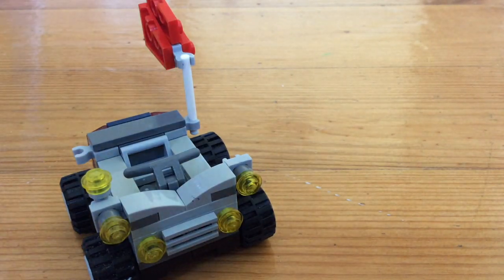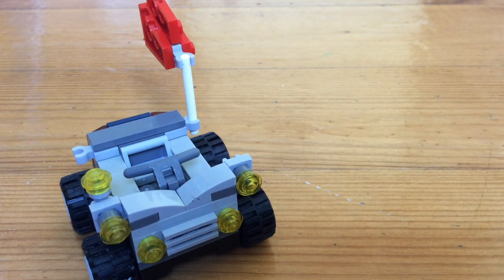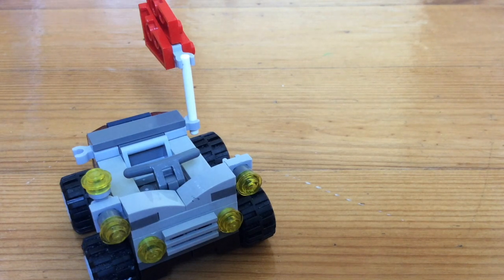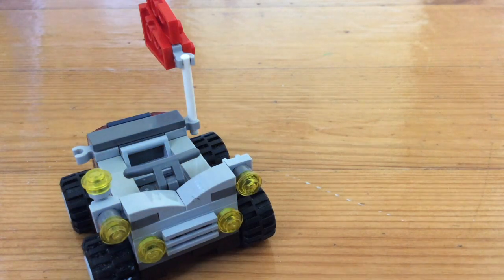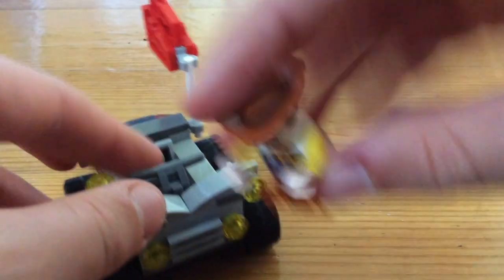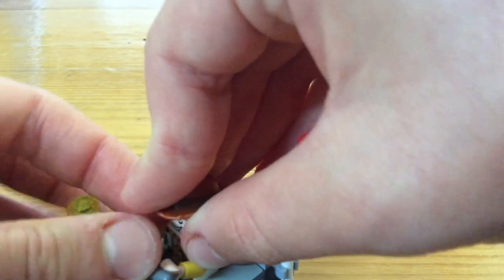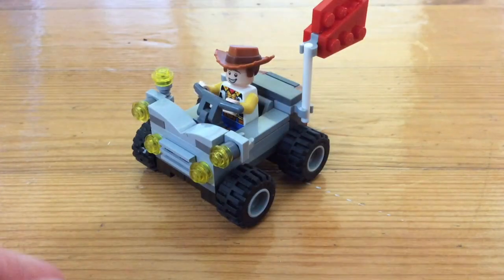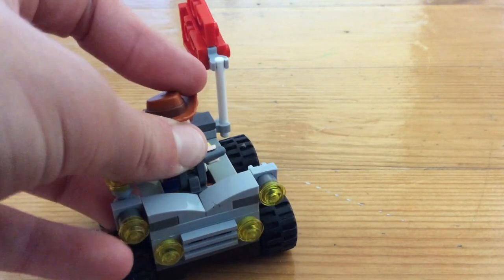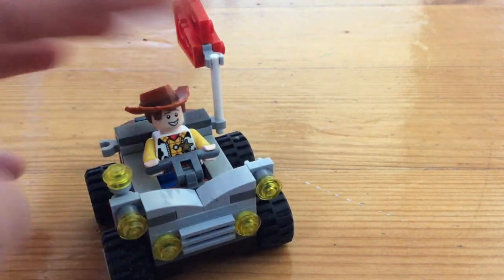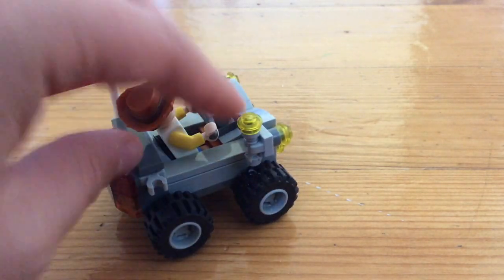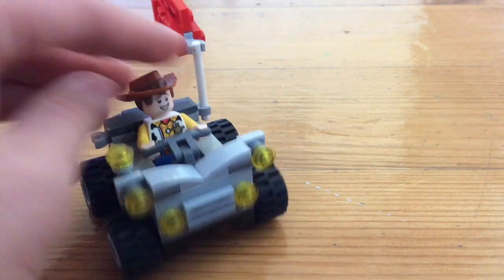Plop a minifigure there. Where's my nearest one? Woody. Woody from Toy Story, the new one. I don't have the old classic one. So here we are, we have Woody. Sit Woody in just in there. You can lay him back way further like this.